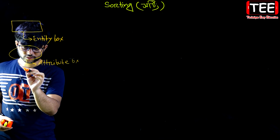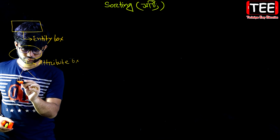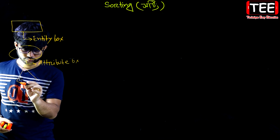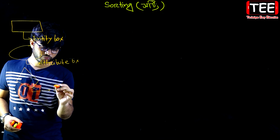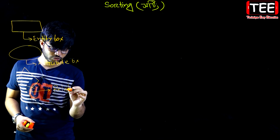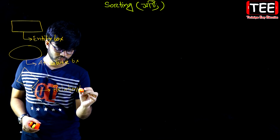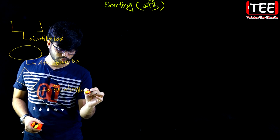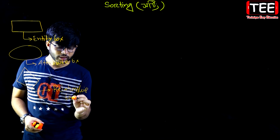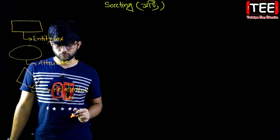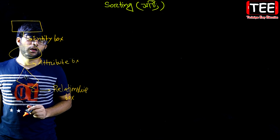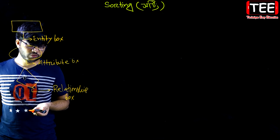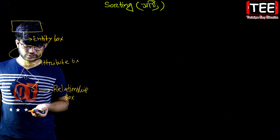This is the relationship box. This is the relationship box. And this is the attribute box.